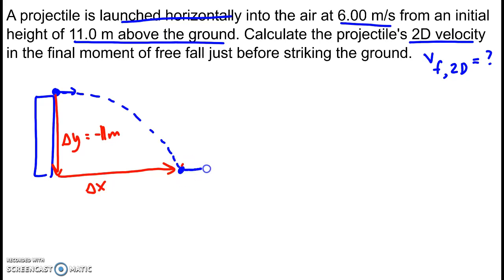On the x-axis, the velocity doesn't change. So if it's going 6 meters per second here, then it still goes 6 meters per second right here.